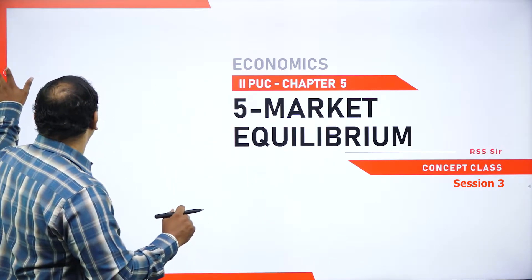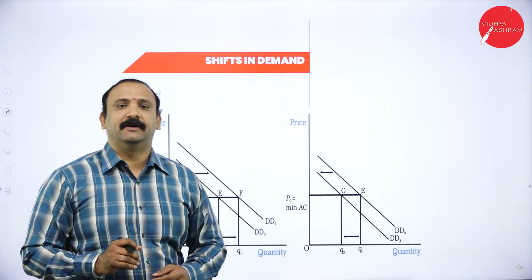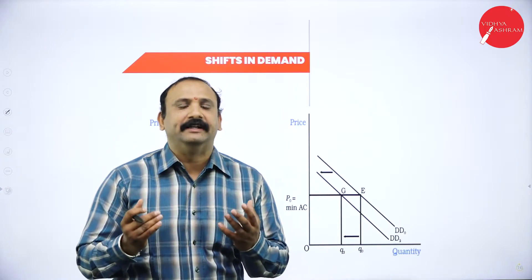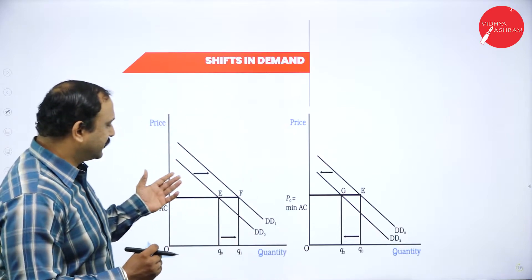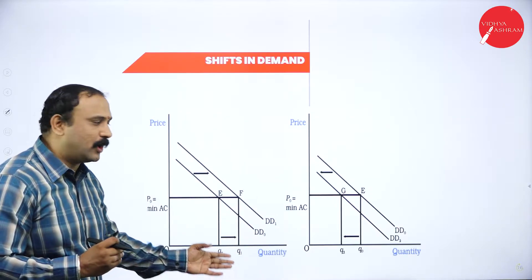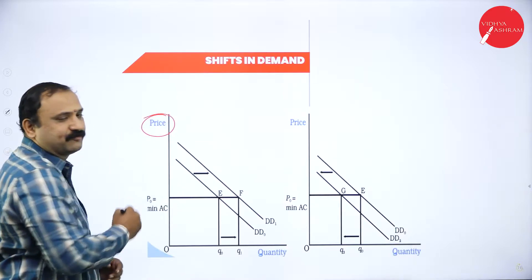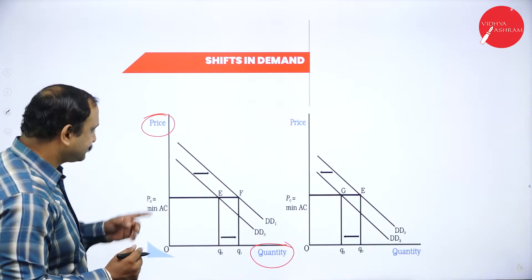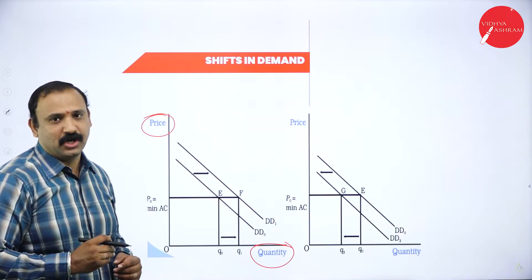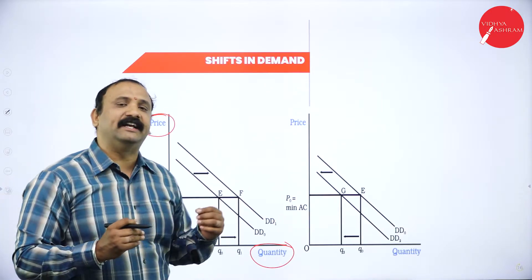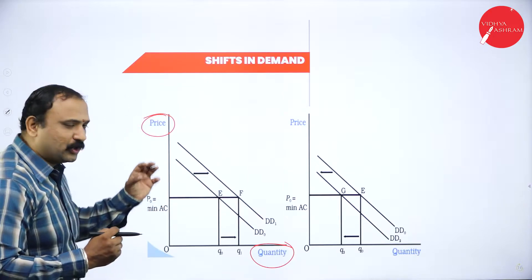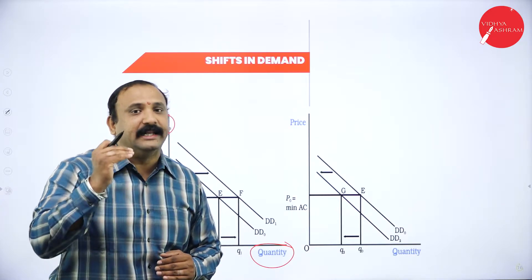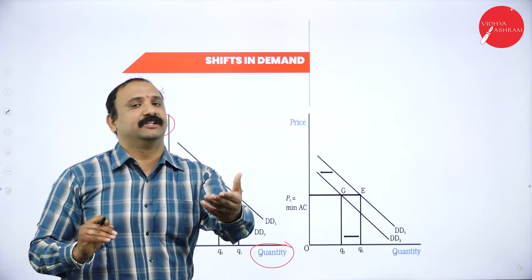Going forward — shift in demand. What happens when there is a shift in the demand curve altogether? How does a shift in demand actually happen? If you look into the graph, on the x-axis we have quantity and on the y-axis we have the price factor. The law of demand says that an increase in price will lead to a decrease in demand, and vice versa.